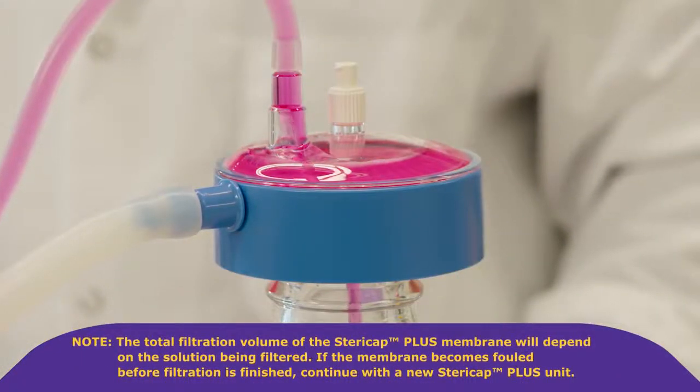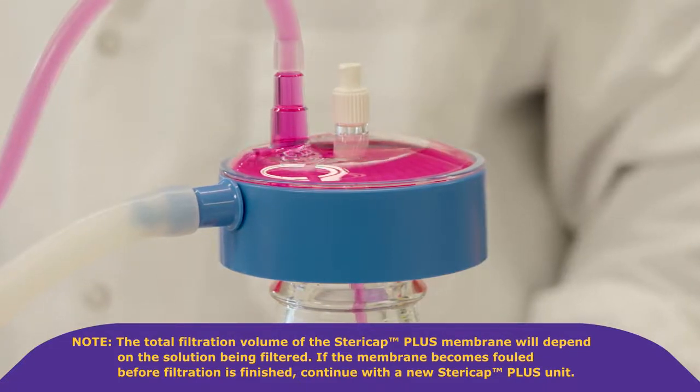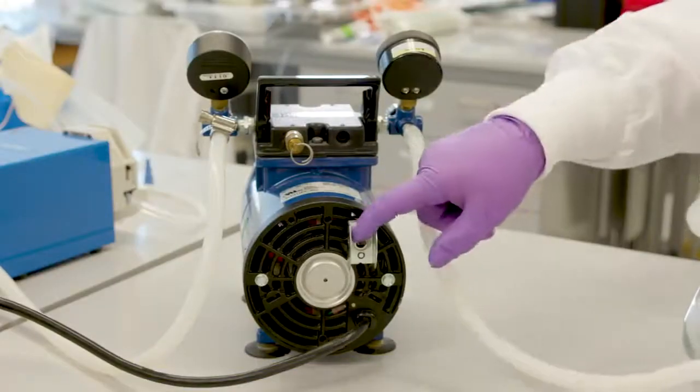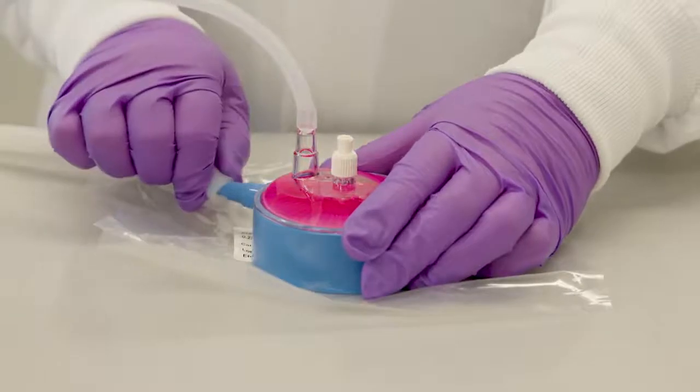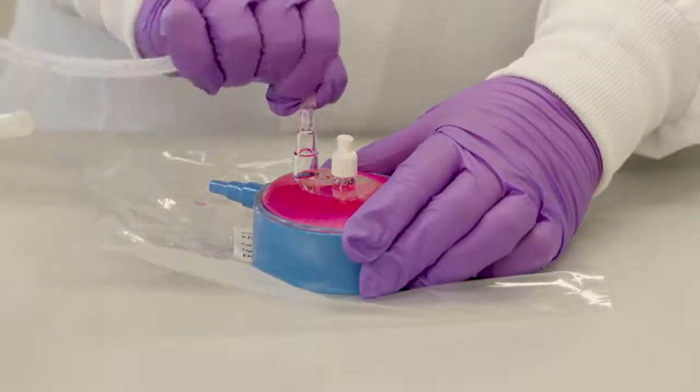Note, the total filtration volume of the SteriCap Plus membrane will depend on the solution being filtered. If the membrane becomes fouled before filtration is finished, continue with a new SteriCap Plus unit. Turn off the vacuum source to end filtration. Then disconnect the vacuum and tube set from the filter unit. Discard SteriCap Plus filter unit appropriately.